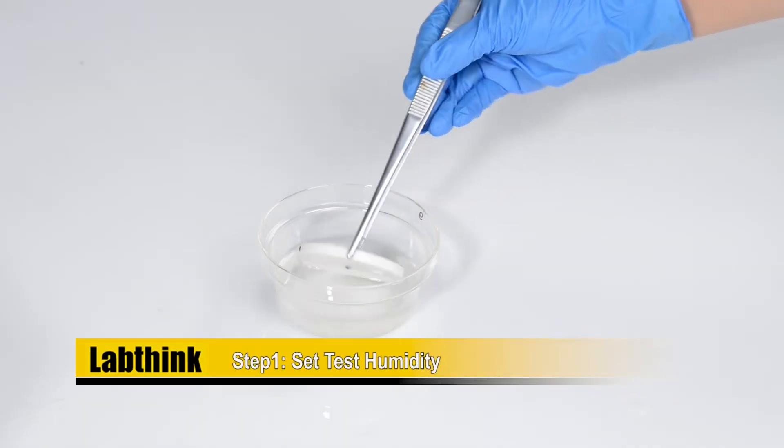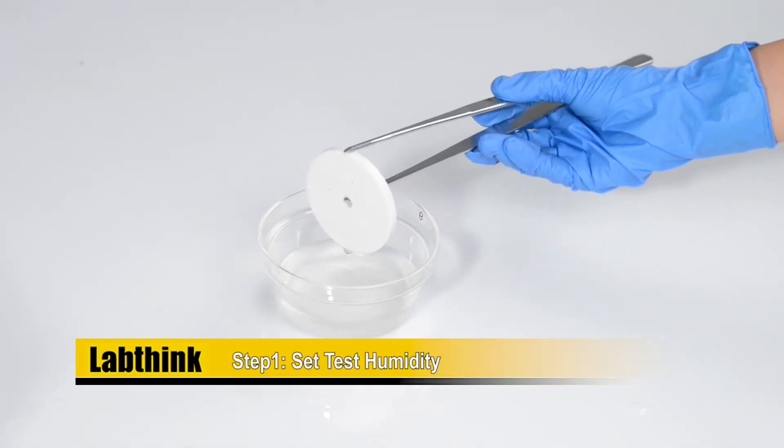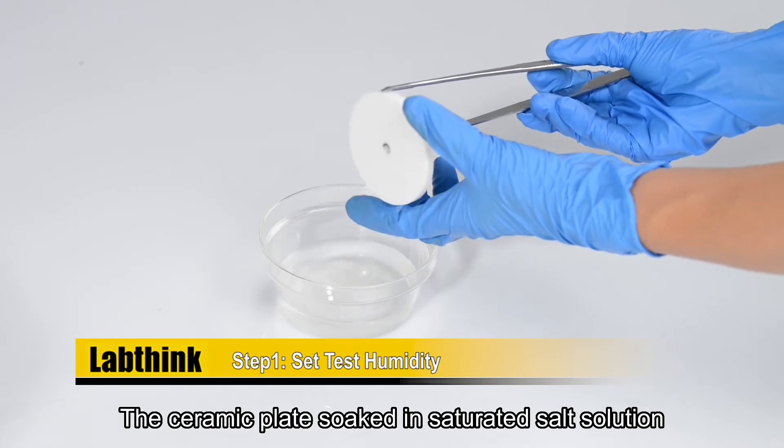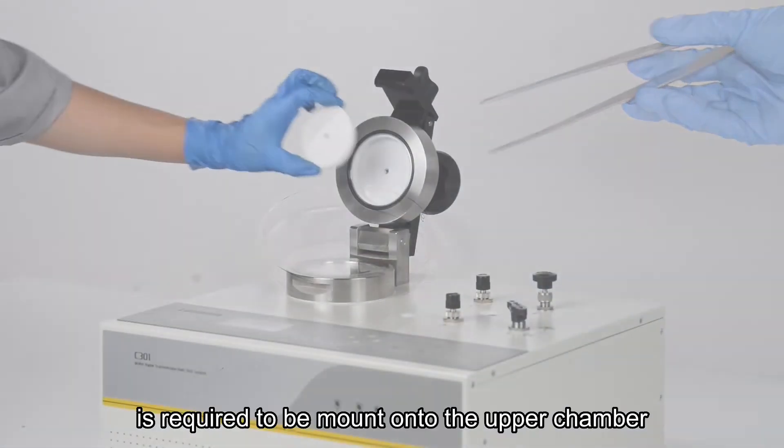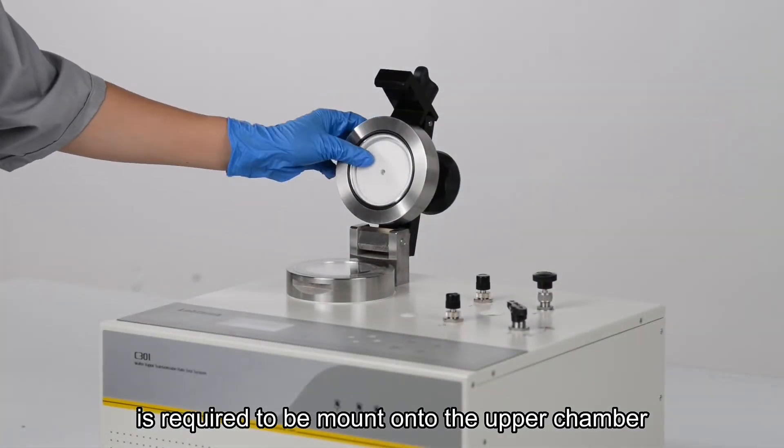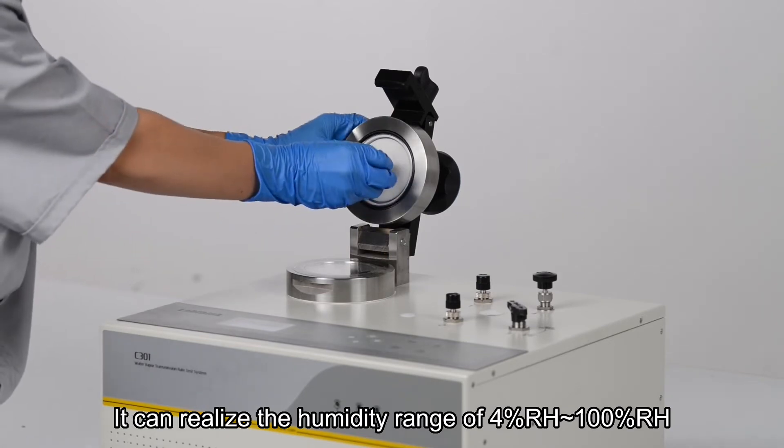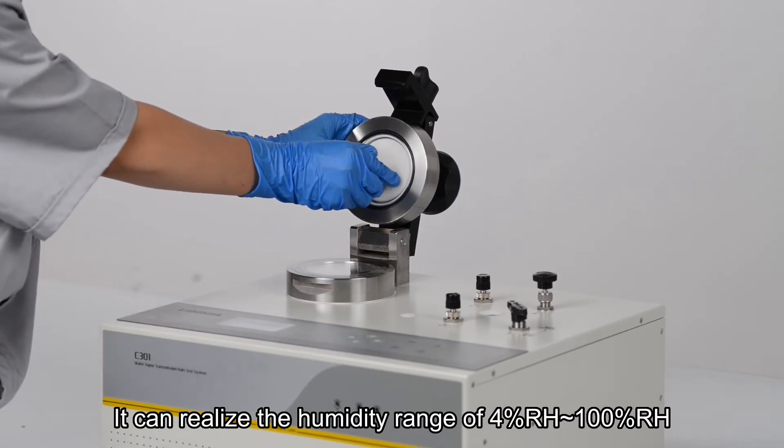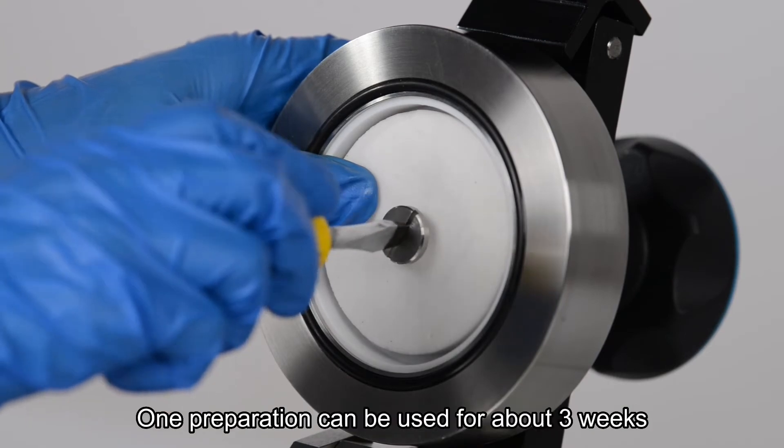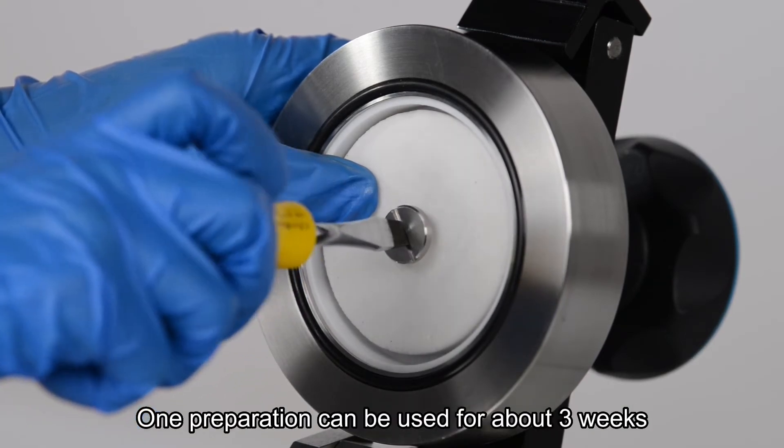Step one, set test humidity. The ceramic plate soaked in saturated salt solution is required to be mounted onto the upper chamber. It can realize the humidity range of 4% to 100% relative humidity. One preparation can be used for about three weeks.